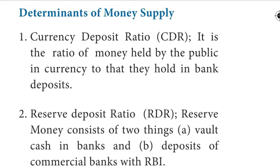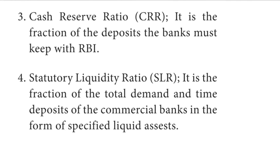Question number 3: What are the determinants of money supply in India? There are four determinants. First, currency deposit ratio (CDR): the ratio of money held by the public in currency to that held in bank deposits. Second, reserve deposit ratio (RDR): reserve money consists of vault cash in banks and deposits of commercial banks with RBI. Third, cash reserve ratio (CRR): the fraction of deposits the banks must keep with RBI. Fourth, statutory liquidity ratio (SLR): the fraction of total demand and time deposits of commercial banks held in the form of specified liquid assets.